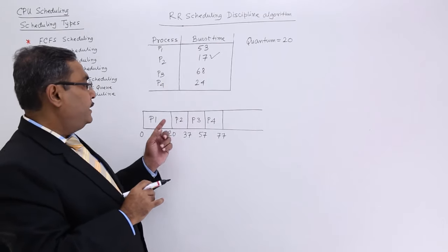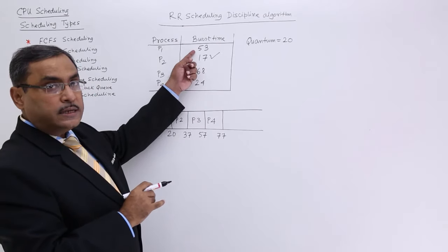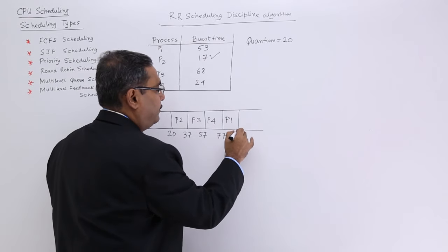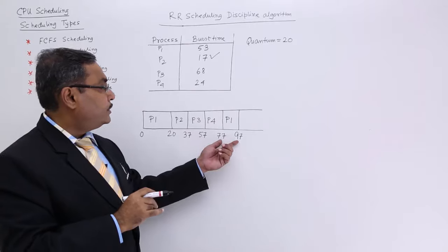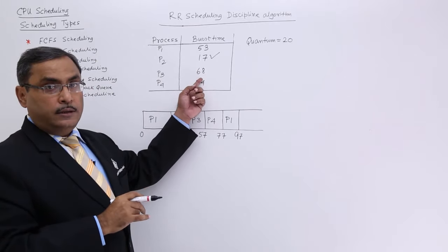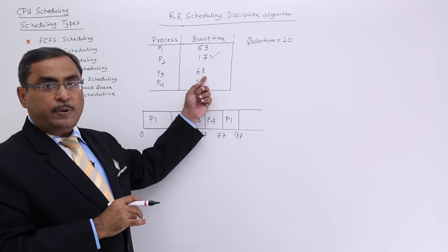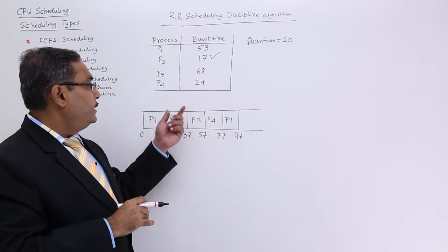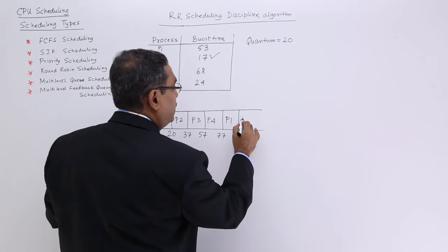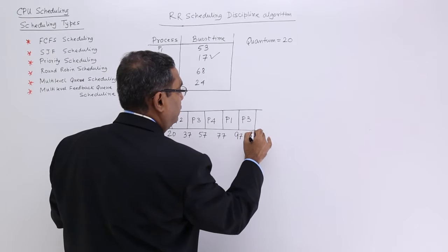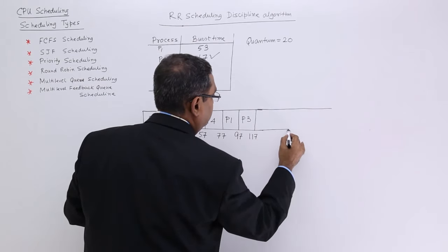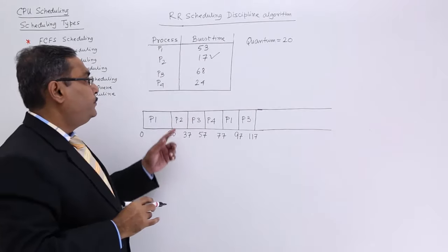So burst time remaining is 33 units. So another quantum can be given to it. So it will become 97, 20 duration. P2 got completion. So P3. So P3 is having the remaining burst time of 48 because 20 was given to it earlier. So now another quantum can be given to P3. So it will be 117.